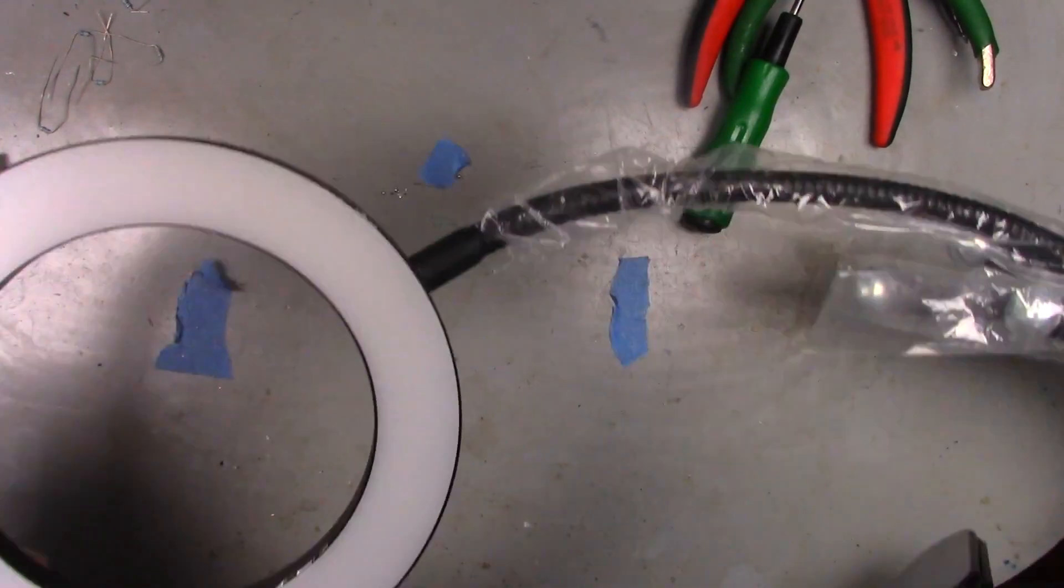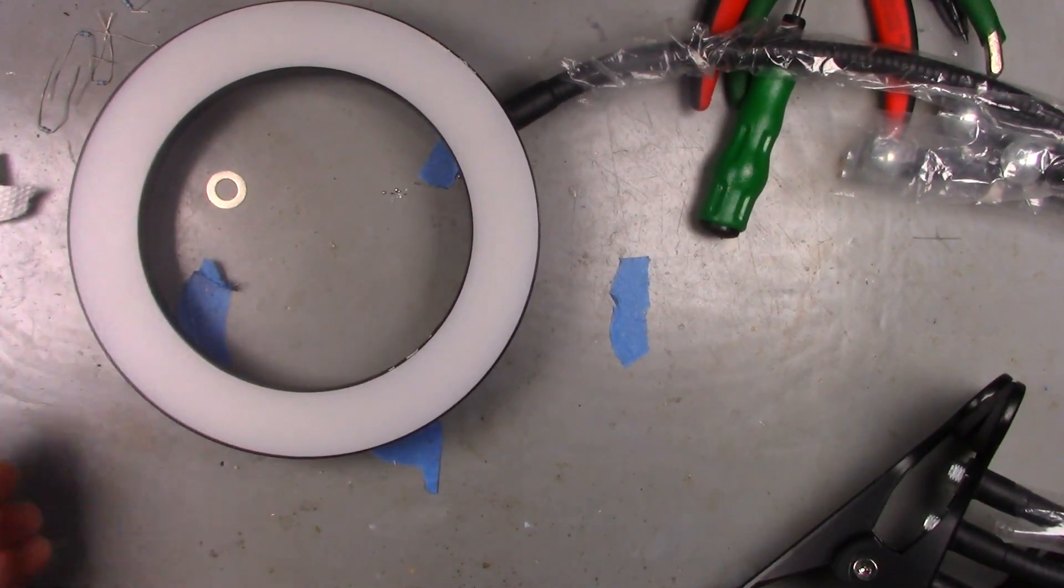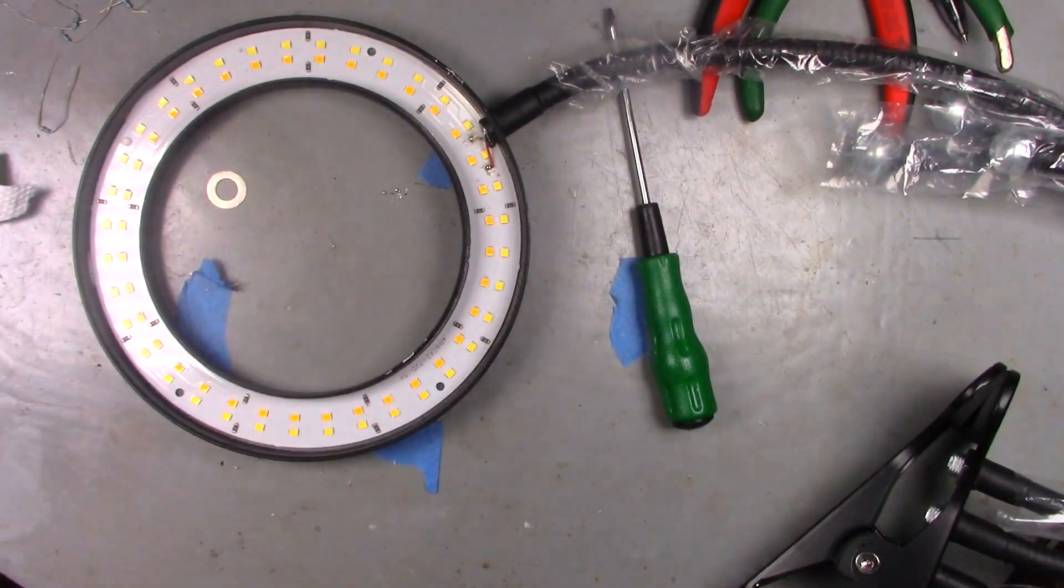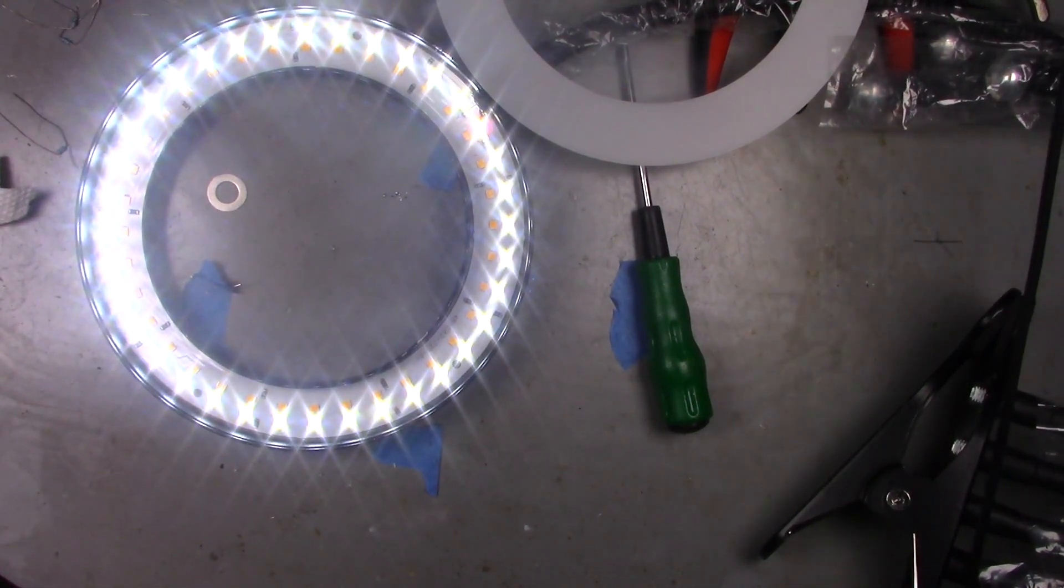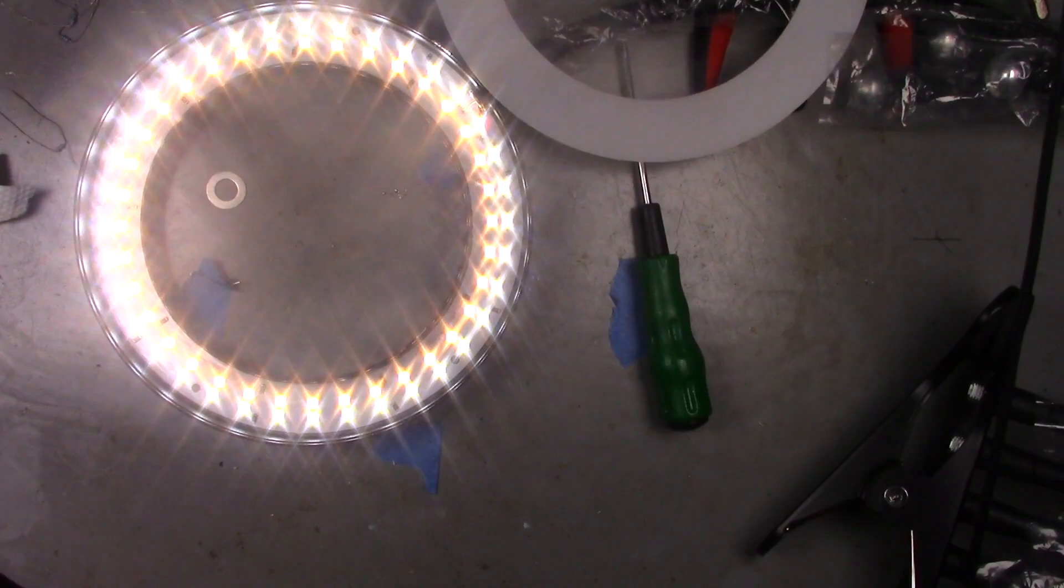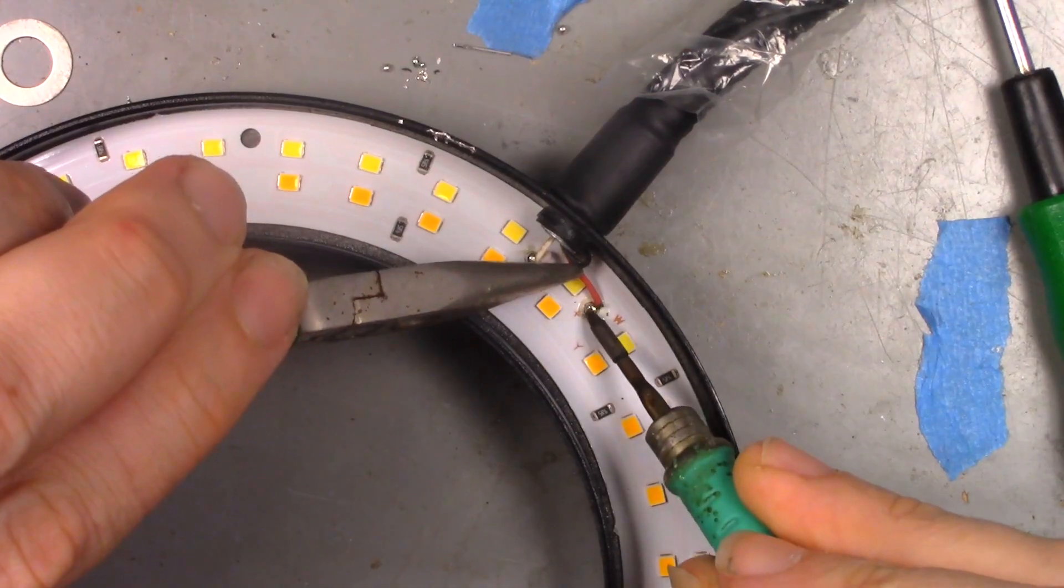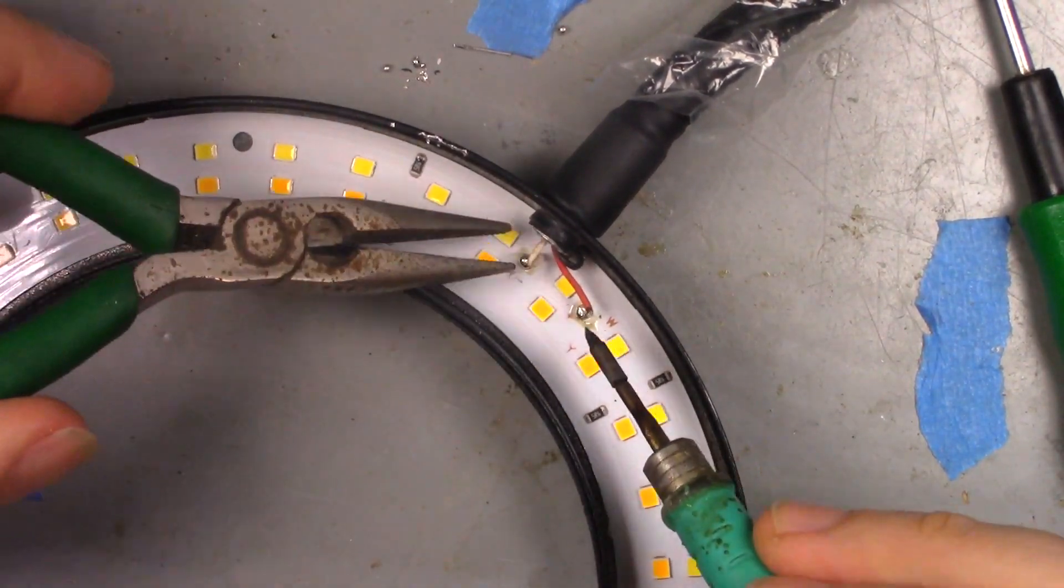Now to do something about the light. Picked up this selfie light ring on eBay for about $8. It already has a gooseneck. The built in controller has multiple modes, which I won't be using. After desoldering the wires, I removed the included clip.